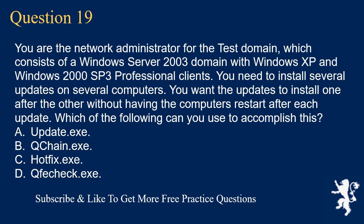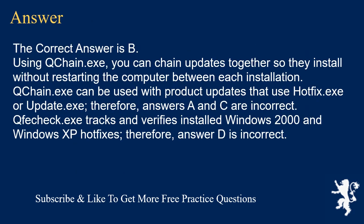Question 19. You are the network administrator for the test domain, which consists of a Windows Server 2003 domain with Windows XP and Windows 2000 SP3 Professional clients. You need to install several updates on several computers. You want the updates to install one after the other without having the computers restart after each update. Which of the following can you use to accomplish this? A. Update.exe. B. Chain.exe. C. Hotfix.exe. D. Trick.exe. The correct answer is B. Using Chain.exe, you can chain updates together so they install without restarting the computer between each installation. Chain.exe can be used with product updates that use Hotfix.exe or Update.exe. Therefore, answers A and C are incorrect. QChain.exe tracks and verifies installed Windows 2000 and Windows XP hotfixes. Therefore, answer D is incorrect.